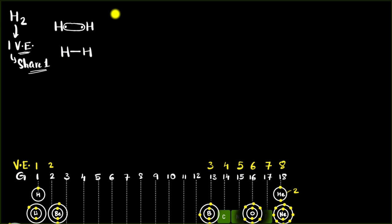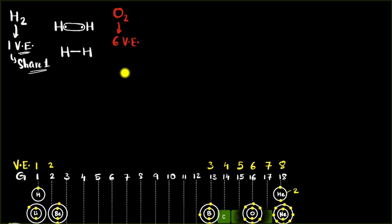Let's take another example — oxygen. Oxygen has six valence electrons; that's where we start. How many does it need to attain stability? If you look at neon, it has eight electrons in the outermost shell and is very stable. So eight electrons in the outermost shell gives you stability.